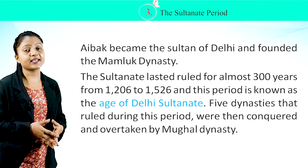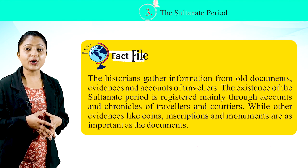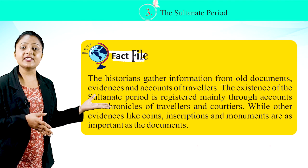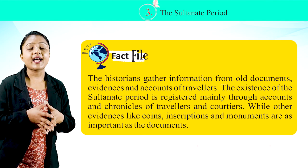Five dynasties ruled during this period before being conquered and overtaken by the Mughal dynasty. Historians gather information from old documents, evidence, and accounts of travelers. The existence of the Sultanate period is recorded mainly through accounts and chronicles of travelers and courtiers, while other evidence like coins, inscriptions, and monuments are equally important.